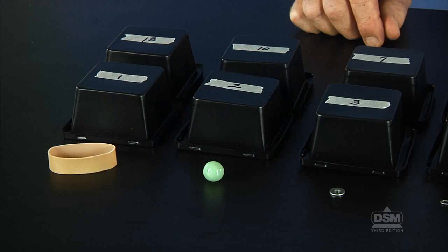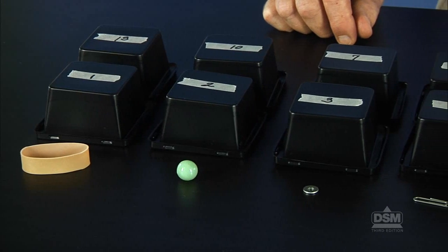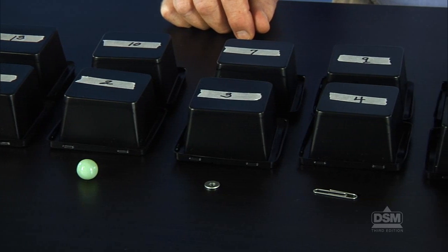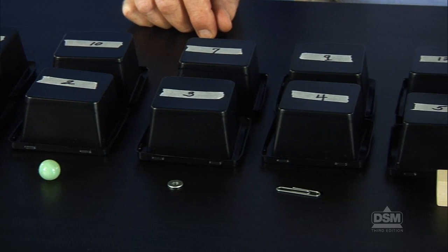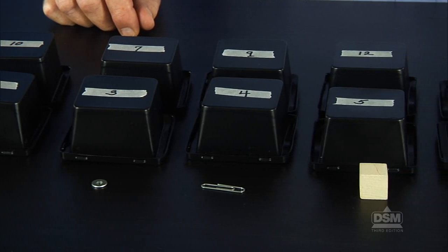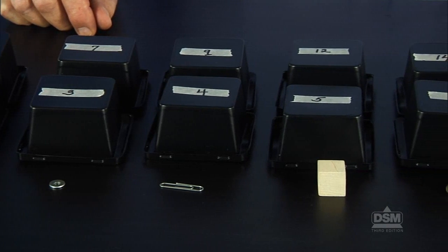Place rubber bands in boxes labeled 1 and 13, marbles in boxes 2 and 10, washers in boxes 3 and 7, paper clips in boxes 4 and 9.